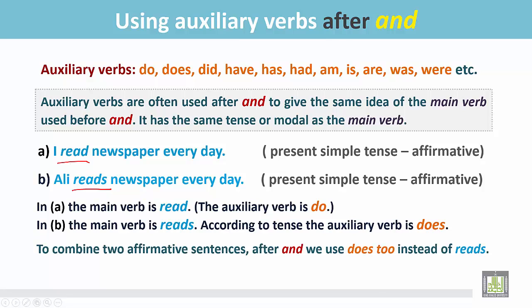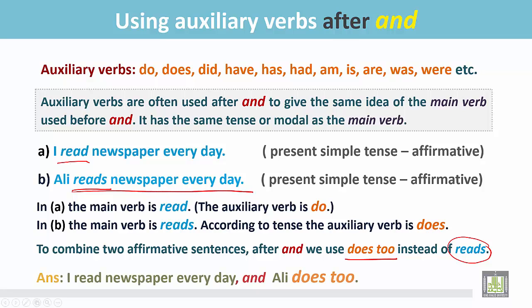To combine these two affirmative sentences after 'and,' we use 'does too' instead of 'reads newspaper every day' — we do not write that again. The answer is: 'I read newspaper every day,' then a comma, then 'and,' then the second sentence with 'does too.' We need not write 'reads newspaper every day' again.